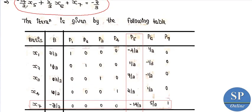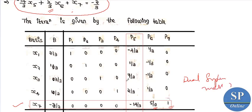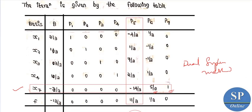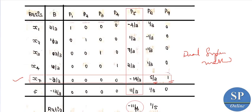The coefficients in the new row are: x5 coefficient is minus 14/3, x6 coefficient is 5/3, x7 coefficient is 1, and the constant term is minus 2/3. Since the value of b for row x7 is negative (b7 = -2/3), we apply the dual simplex method. The outgoing variable is x7. Finding the ratio: (11/3) divided by (minus 14/3) equals minus 11/14. The incoming variable corresponding to the minimum ratio is x5.